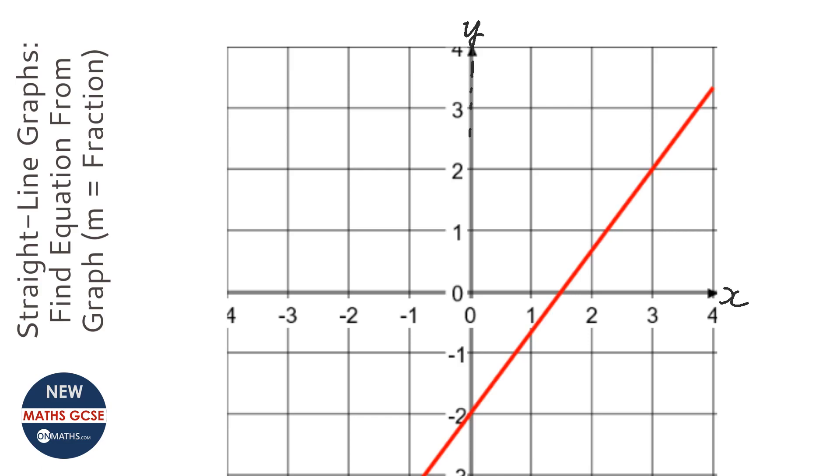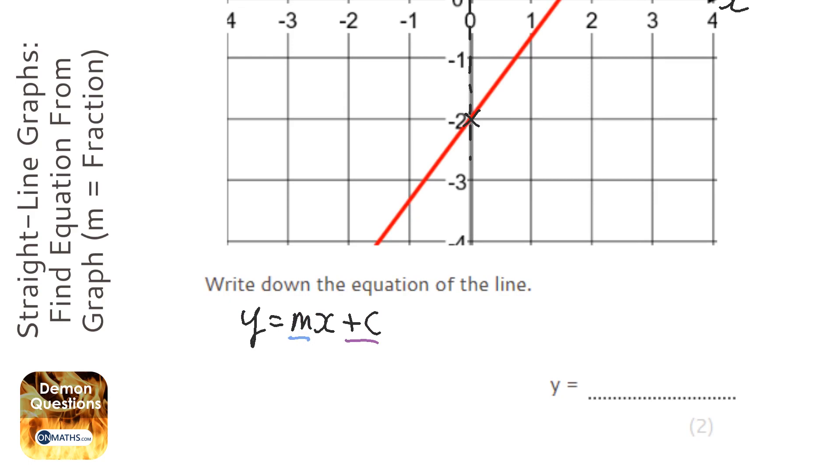So go down this line here and find out where the line crosses it, which is here. So it's at minus 2. So already I can say y equals mx and then plus minus 2, which just makes minus 2. So brilliant, I'm halfway there.